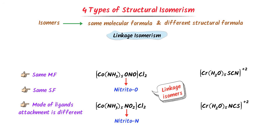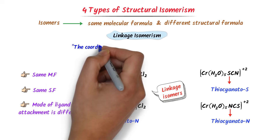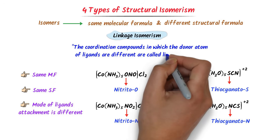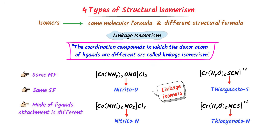Similarly, consider two coordination compounds where the donor atom is sulfur (thiocyanato-S) in the first and nitrogen (thiocyanato-N) in the second — these are also linkage isomers. Linkage isomerism is defined as: coordination compounds in which the donor atom of the ligands are different are called linkage isomers. This is the third type of structural isomerism.